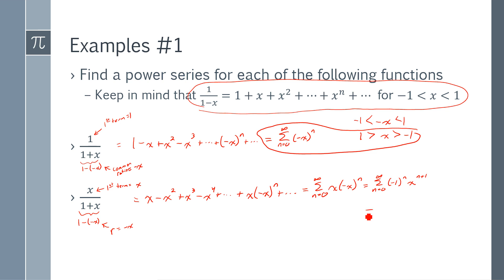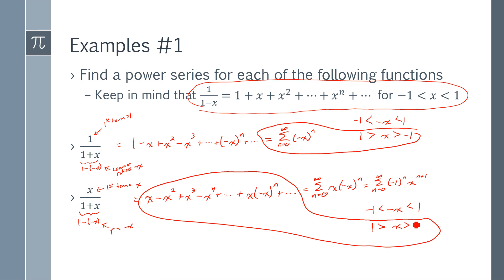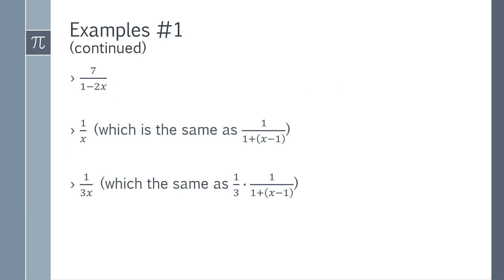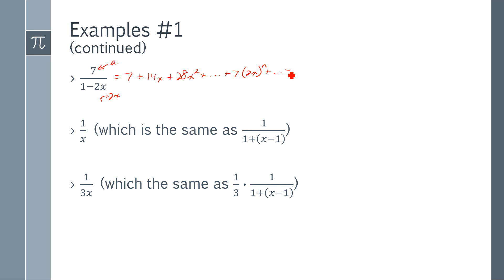Because my common ratio is the same for the second example, I have to make sure I'm including which x values this works for. For the next examples, it wouldn't hurt to pause the video and try them first. For seven over one minus two x: my first term is seven, my common ratio is 2x, so I get the sum from n=0 to infinity of 7·(2x)^n.